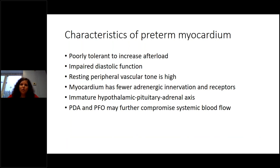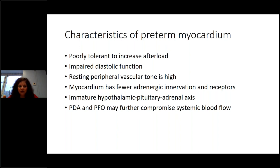Because of this, the preterm myocardium is very poorly tolerant to increases in afterload — remember this point because we'll return to it when discussing how to treat hypotension in a preterm infant. There is also impaired diastolic function. With a heart rate of 150–180 beats per minute, contracting at such a fast rate compromises diastolic function.